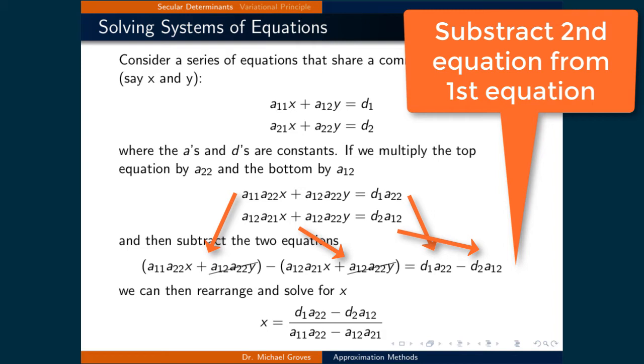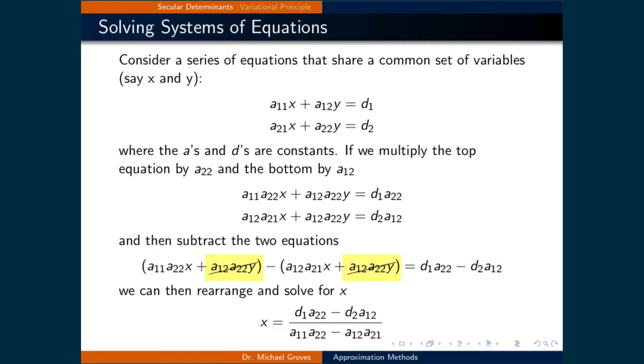After subtraction, we get a11a22x plus a12a22y minus a12a21x minus a12a22y equals d1a22 minus d2a12. The y terms cancel out. Rearranging and solving for x gives x equals (d1a22 minus d2a12) over (a11a22 minus a12a21).